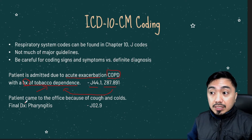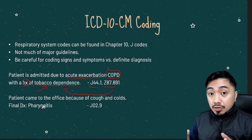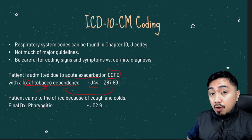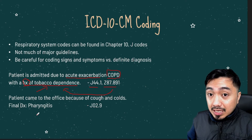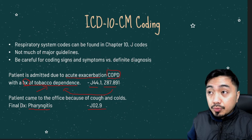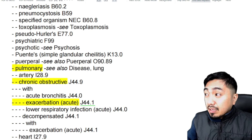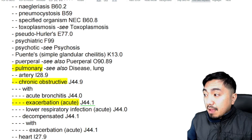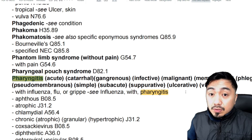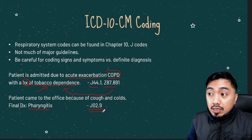Let's proceed to the second scenario. A patient came to the office because of cough and colds, but the final diagnosis is pharyngitis. Since cough and colds are inherent to the disease process, you don't have to code them separately. All you need to do is code pharyngitis, which falls under J02.9. Go to your alphabetic index, search the term 'pharyngitis,' locate it under letter P, and the default code that appears is J02.9. That's your diagnosis code.